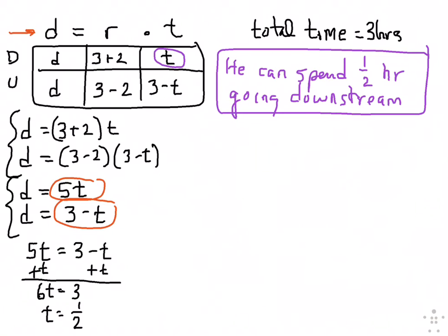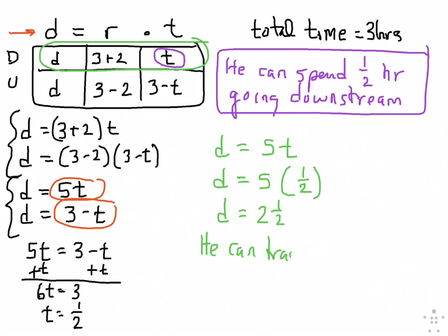And if it asked, he now has two and a half hours to go upstream, because three minus T. But it says, how far downstream can he travel? So what we're going to do for this one, this is our downstream equation. So we have D equals three plus two, five times T. And if he's spending half an hour, then we know it's D equals five times a half. So the distance is two and a half. So he can travel two and a half miles downstream.